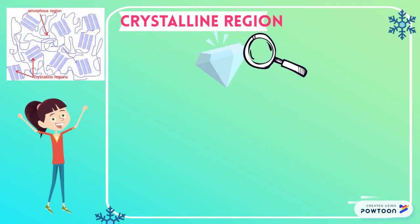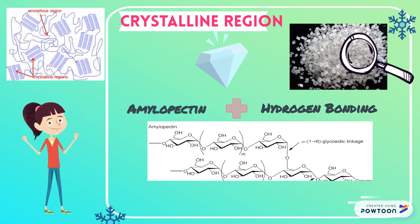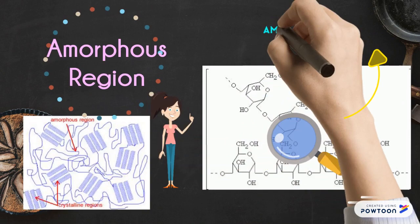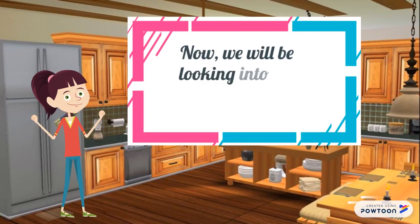The crystalline region is predominantly made up of amylopectin, whose outer branches are hydrogen bonded to each other to form crystallites that unravel during gelatinization. The amorphous region of granules is mainly composed of amylose and amylopectin branch points.